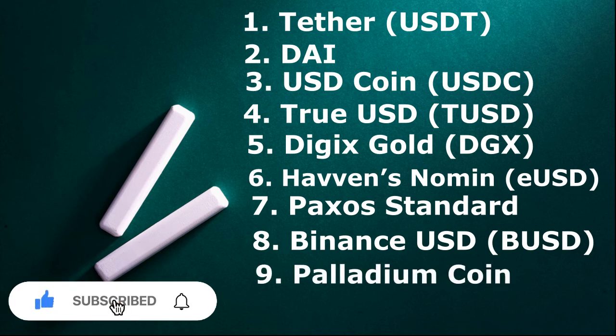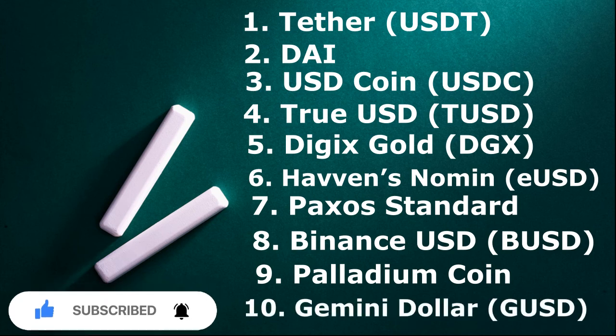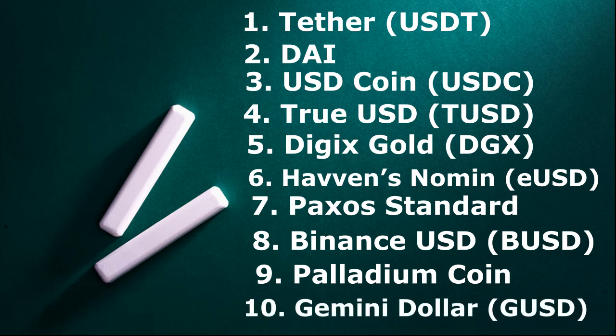Then we have the Binance stablecoin BUSD. The next one is the Palantium coin, and the last on the list is the Gemini Dollar — the ticker is GUSD. Some of these coins are not that popular; the ones you come across most of the time are Tether (USDT), Binance's BUSD, DAI, and the USD Coin from Coinbase.